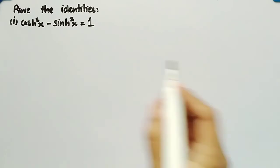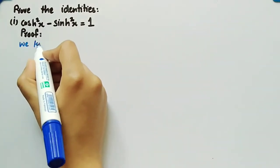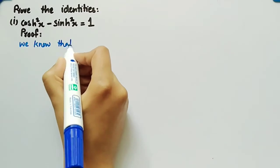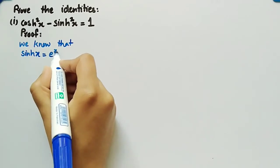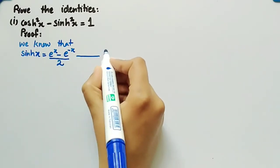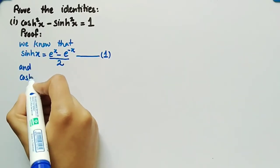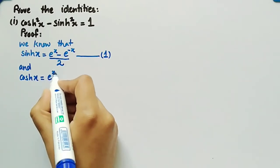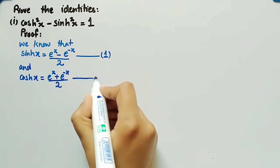Firstly, we will prove cosh²(x) minus sinh²(x) is equal to 1. Coming towards its proof, we know that sinh(x) is equal to (e^x minus e^(−x)) divided by 2 — let this be equation 1. And cosh(x) is equal to (e^x plus e^(−x)) divided by 2 — let this be equation 2.